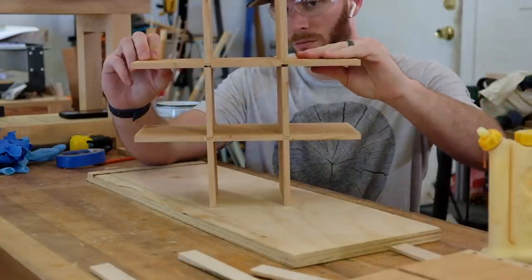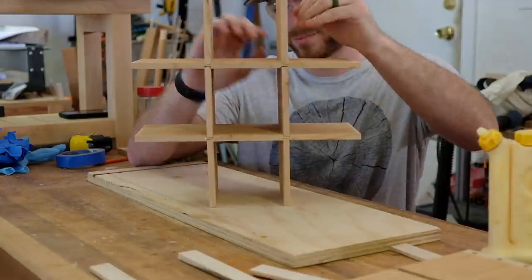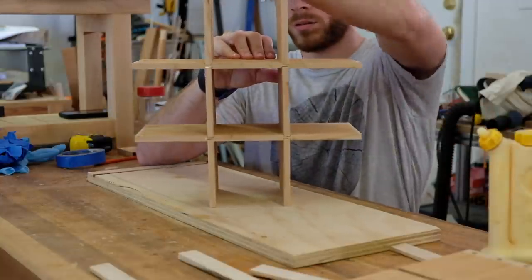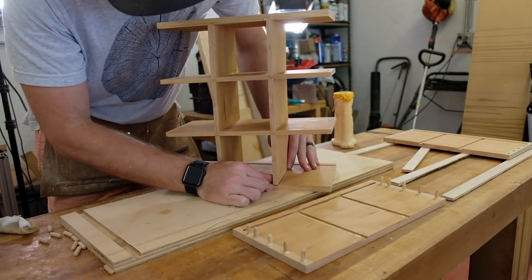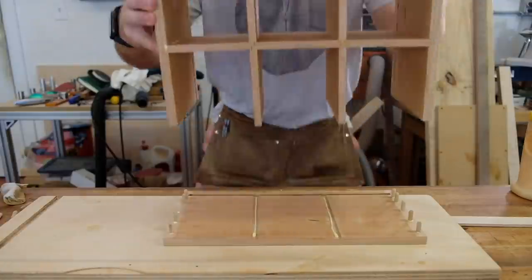I realized it was simpler to do it all at once if you work from the middle out. By starting from the middle out I avoid sliding the dividers through the dados and pushing glue everywhere. Once the dividers are together I then add the two side panels.